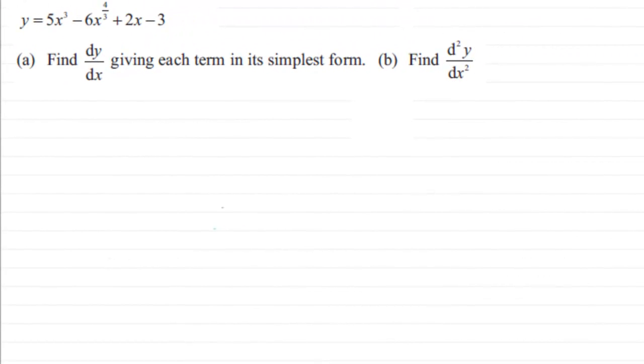Hi, this is a nice question just to practice your differentiation. What we have here is y equals 5x cubed minus 6x to the power 4 thirds plus 2x minus 3. We've got to find in the first part dy by dx, giving each term in its simplest form, and then for part b find the second differential d2y by dx squared.